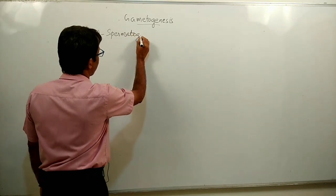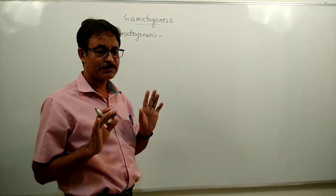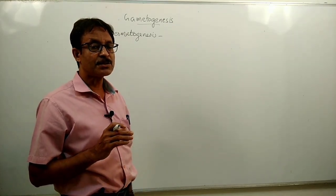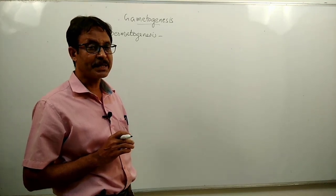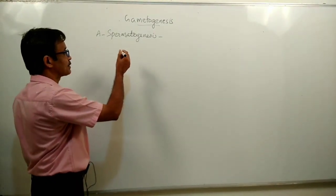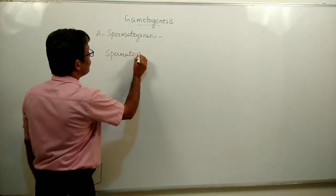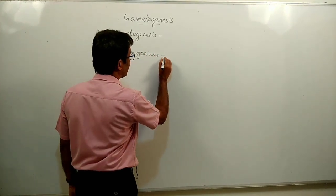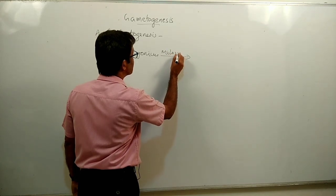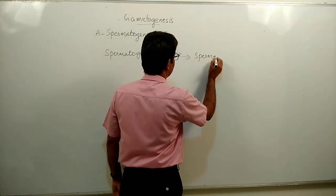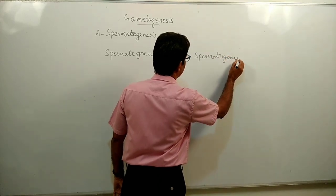Spermatogenesis is the development of sperm in the testes. The testes possess numerous seminiferous tubules, and those seminiferous tubules possess millions of germ cells called spermatogonia. Due to spermatogenesis, one spermatogonium undergoes repeated mitotic division and transforms into many spermatogonia. Thus, large numbers of spermatogonia are produced by repeated mitotic division.